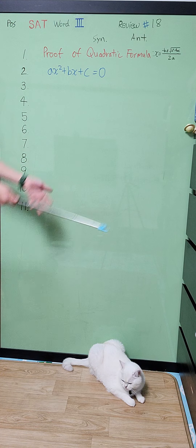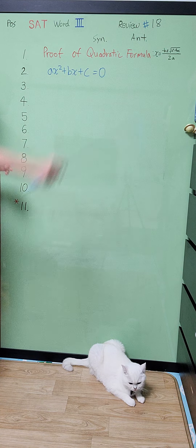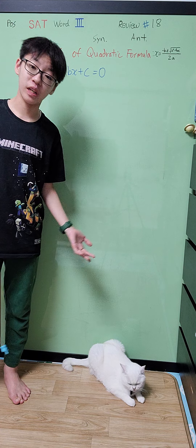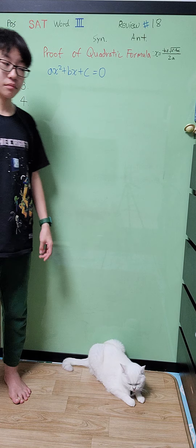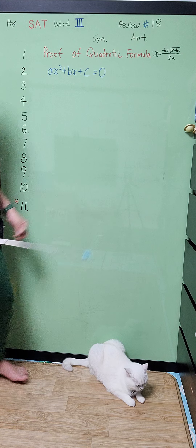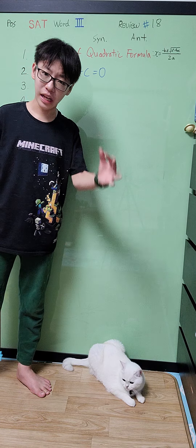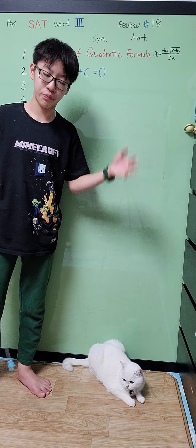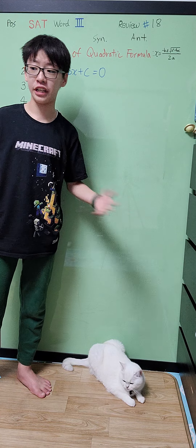But in this part of Review 18, I'm going to tell you the proof of the quadratic formula — how it works and why it exists. As you might know from the last episode, there are actually more ways than the quadratic formula to solve for a quadratic.